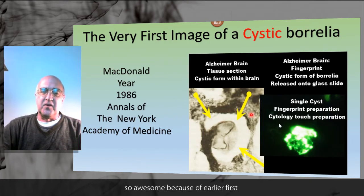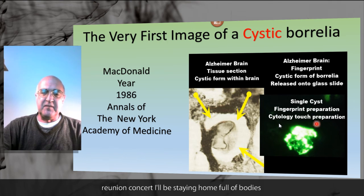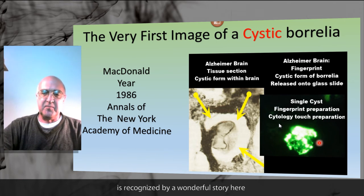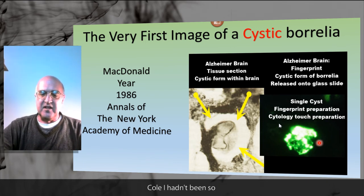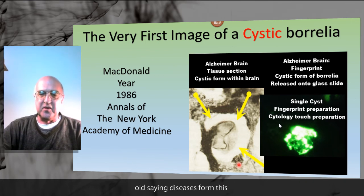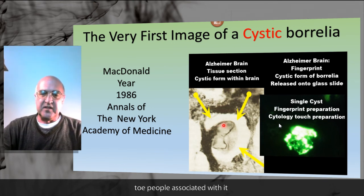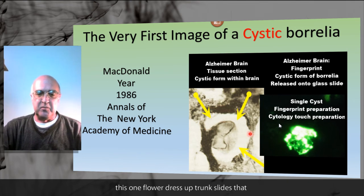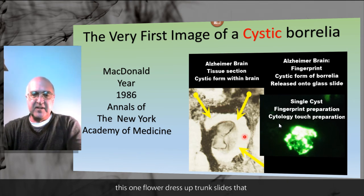Cystic forms of Borrelia: an imprint cytology stained with monoclonal antibodies will glow if the right protein is recognized by the monoclonal antibody. A Borrelia-specific antibody will only recognize Borrelia — not E. coli, not candida, not human cells. The structure is glowing brightly, so it has lots of the protein. Looking into the tissue with a silver stain, we see a cystic form stained with silver. You can see it has a wrinkle associated with it, meaning it was once larger and has now shrunk in size. It contains all the DNA that the cystic form contains.